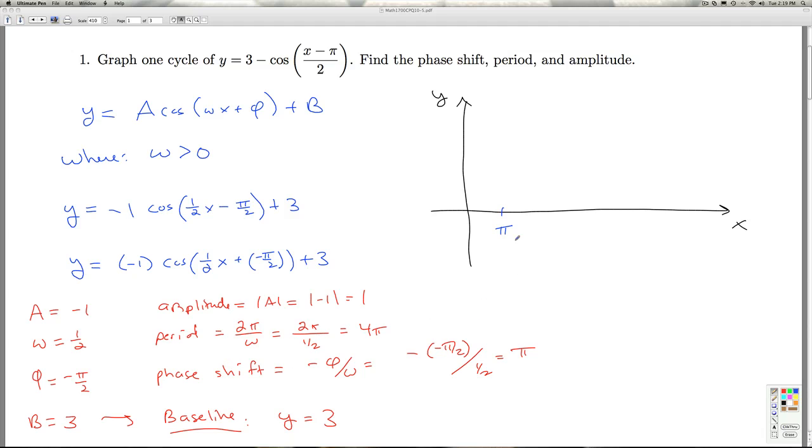The period is 4 pi, so that means that the end of this cycle is going to be 4 pi units later. So I add 4 pi, that's going to get me to 5 pi.